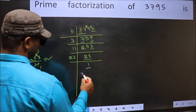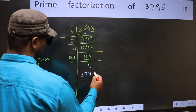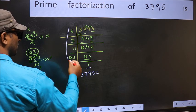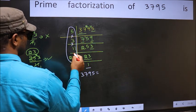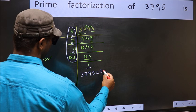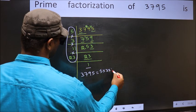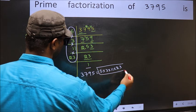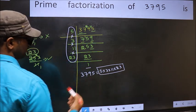So the prime factorization of 3795 is the product of these numbers. That is 5 into 3 into 11 into 23. This is the prime factorization of 3795.